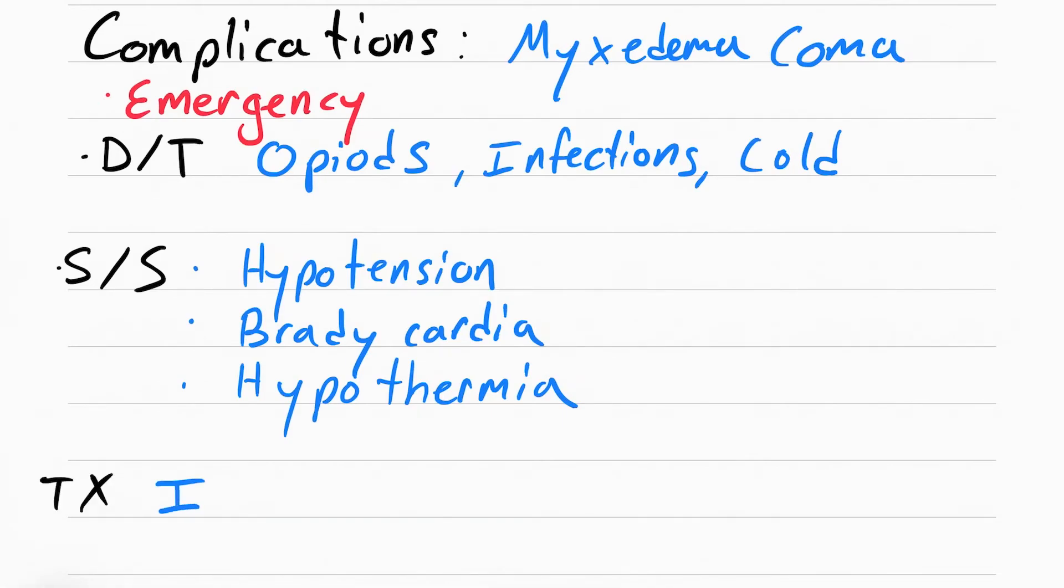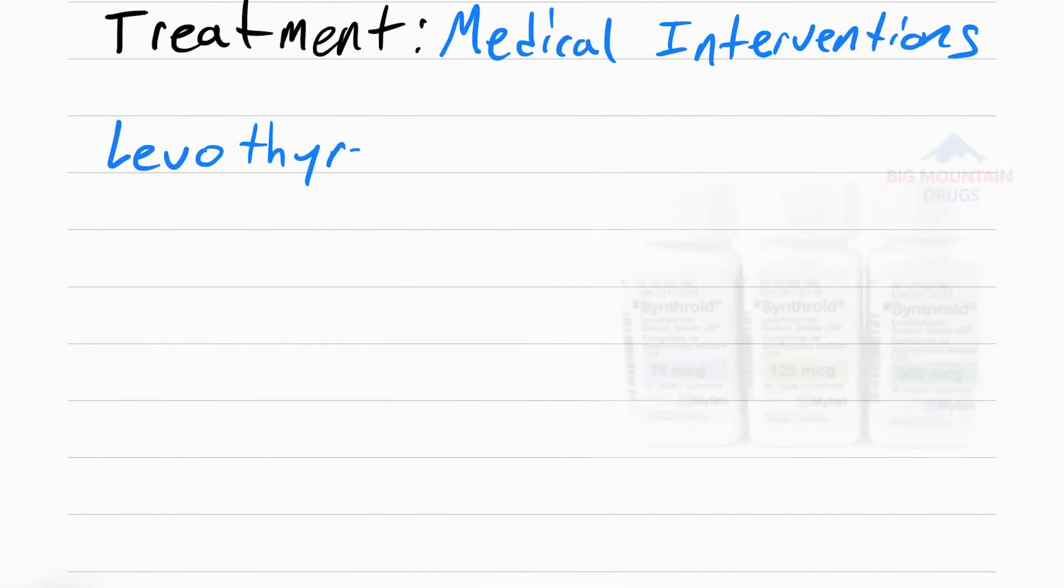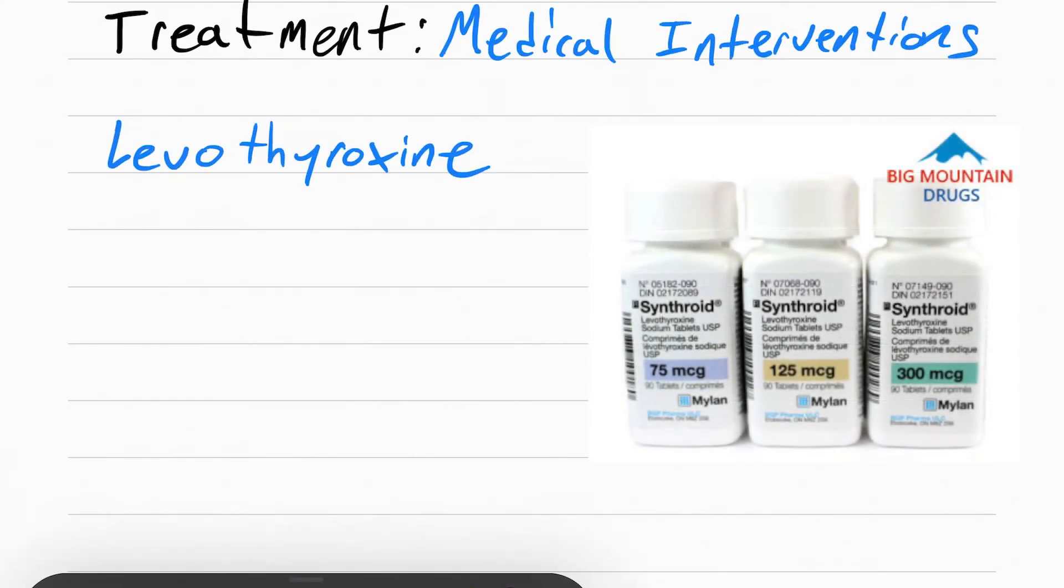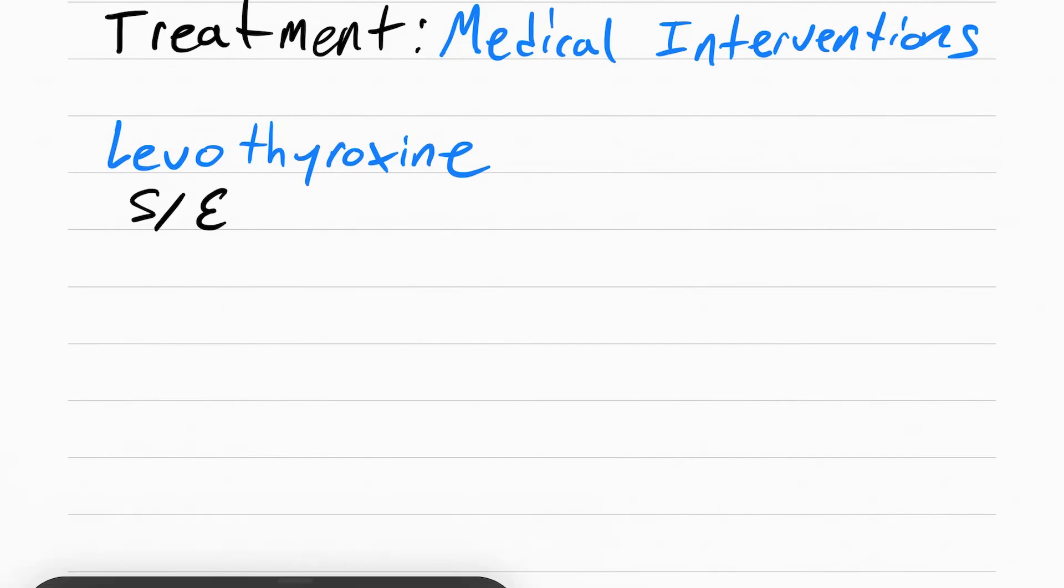The treatment is going to be IV thyroid hormone. It's important we give all meds IV to this patient because their bowels aren't moving anymore. So the thyroid hormone is actually called levothyroxine. This will increase the T3 and T4 in the patient's body.